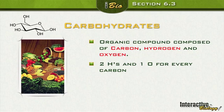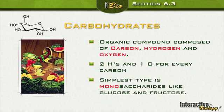If you have six carbons, you'd have twelve hydrogens and six oxygens. If you have ten carbons, you'd have twenty hydrogens and ten oxygens — two hydrogens and one oxygen for every carbon.